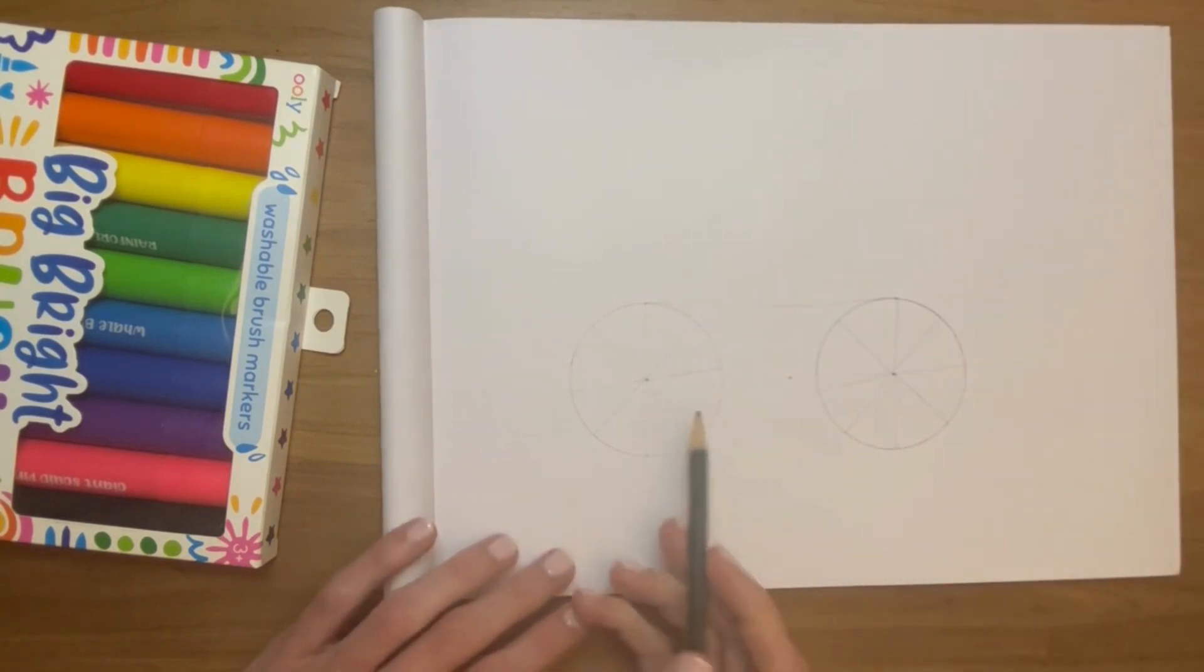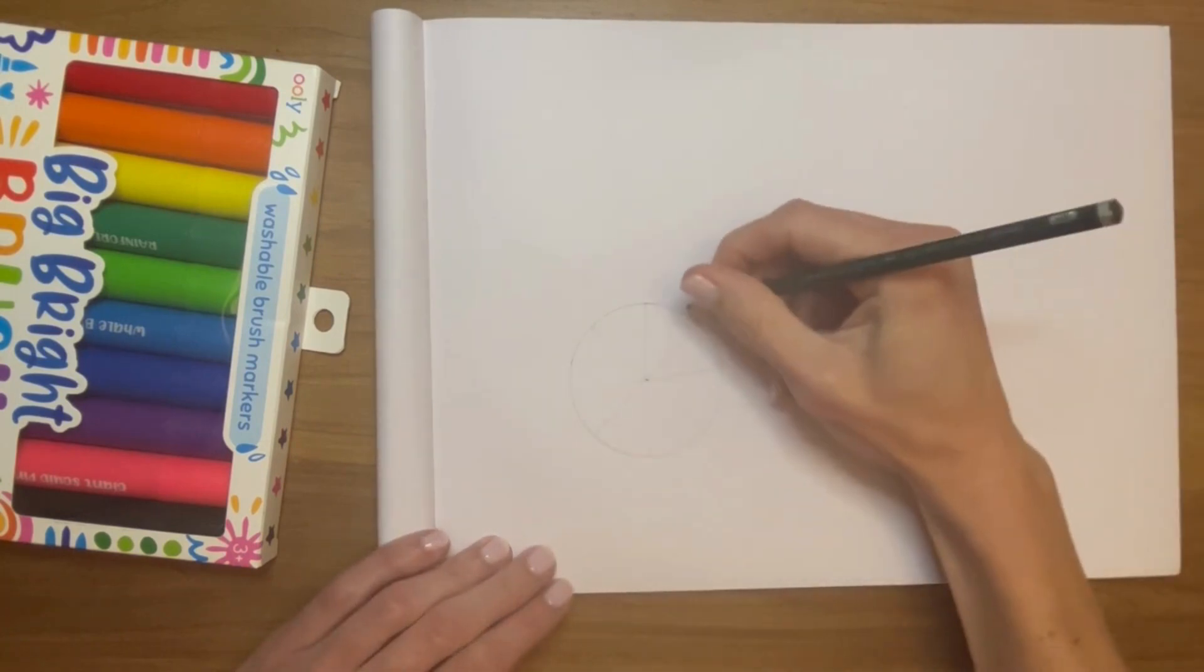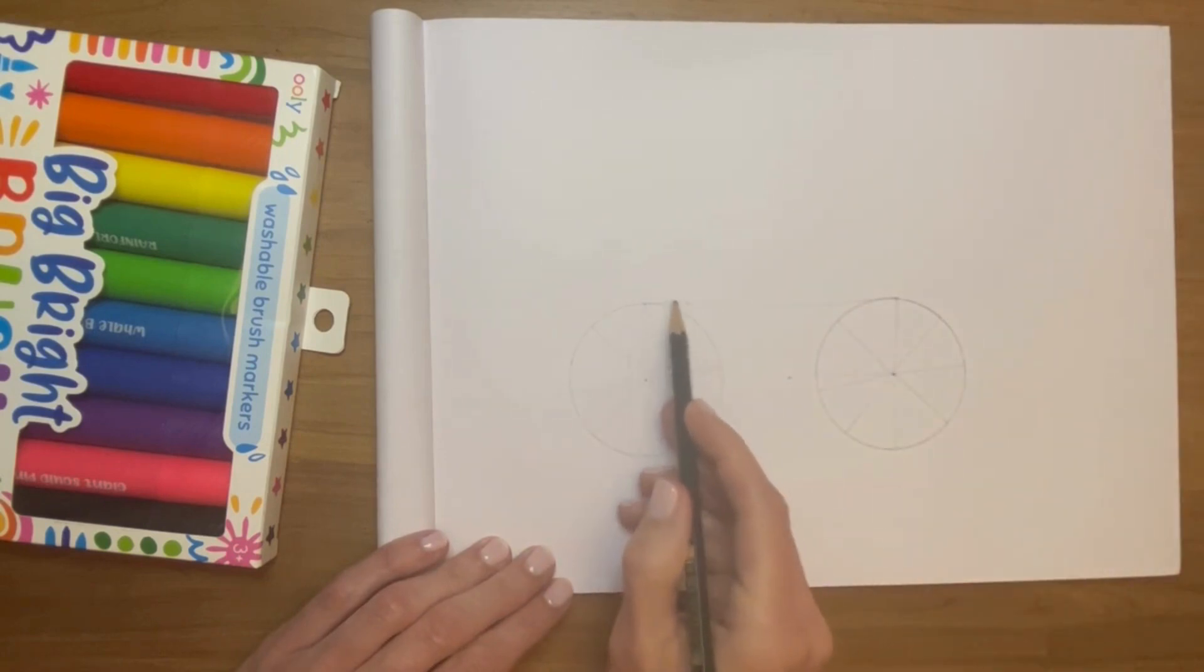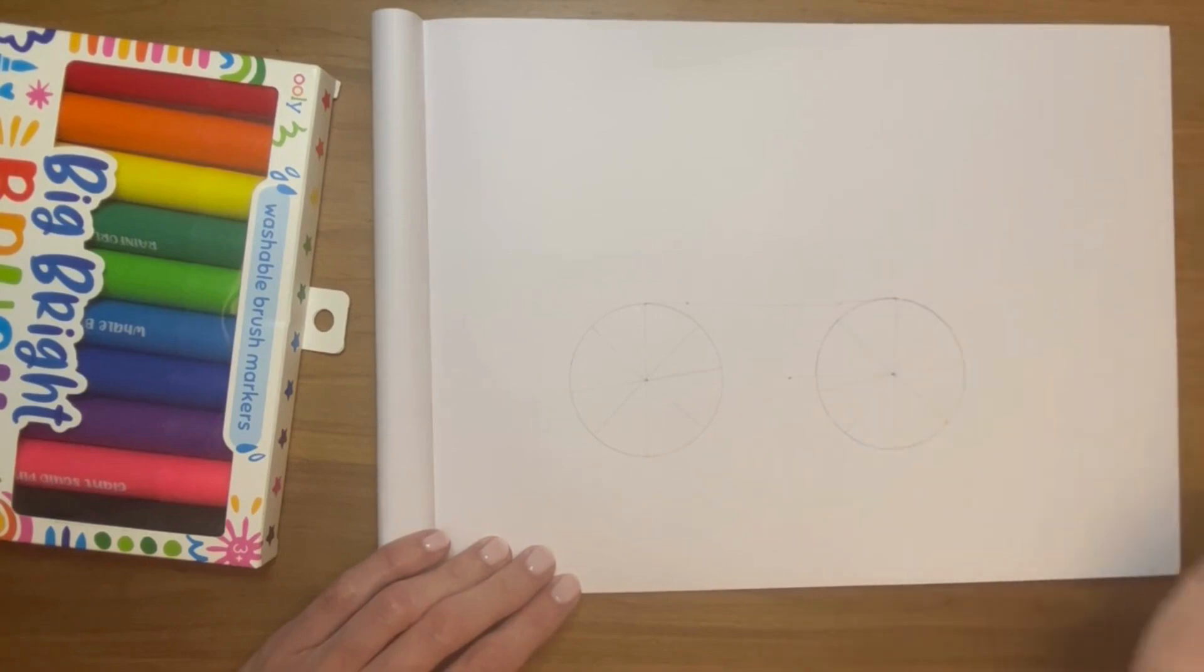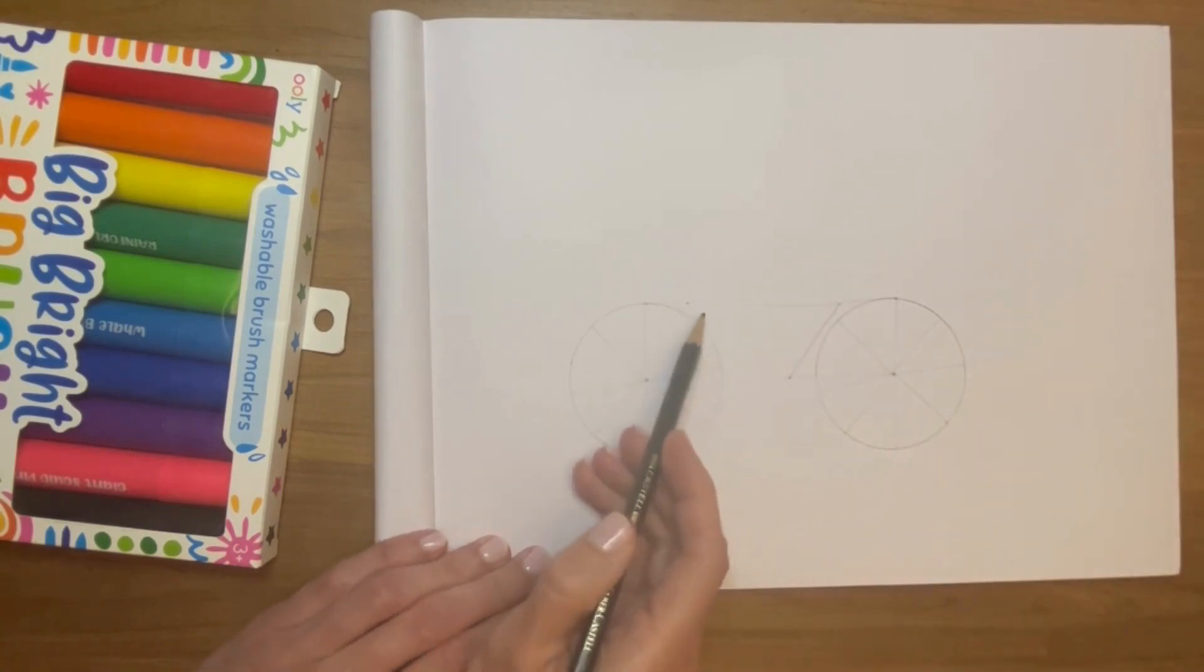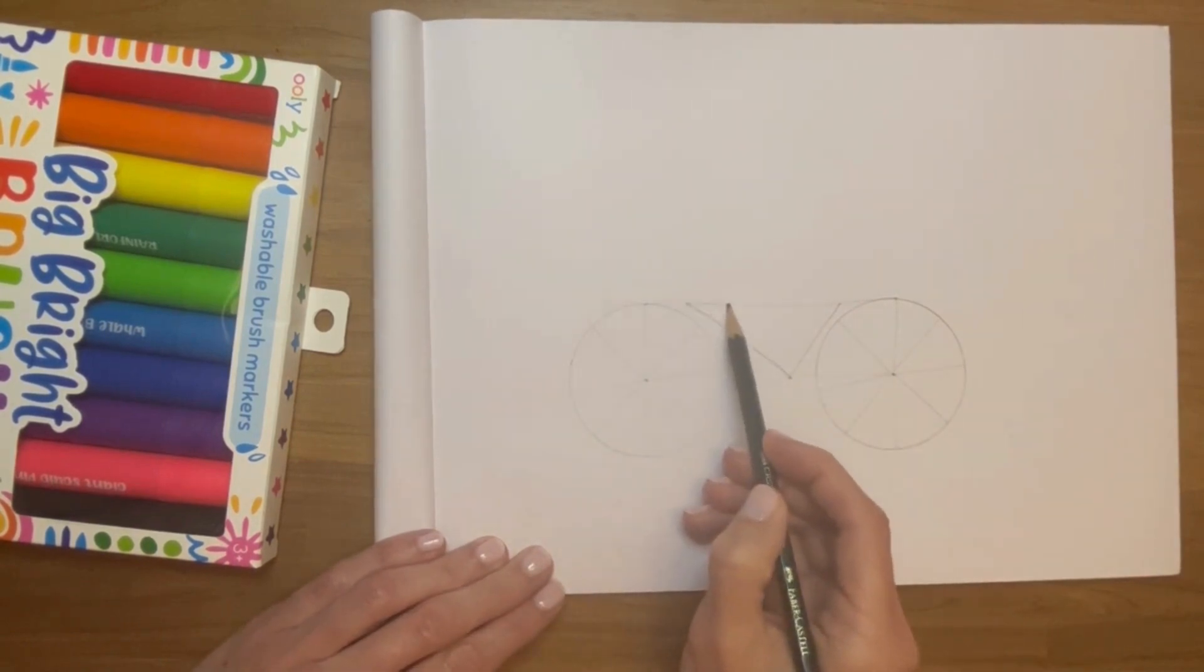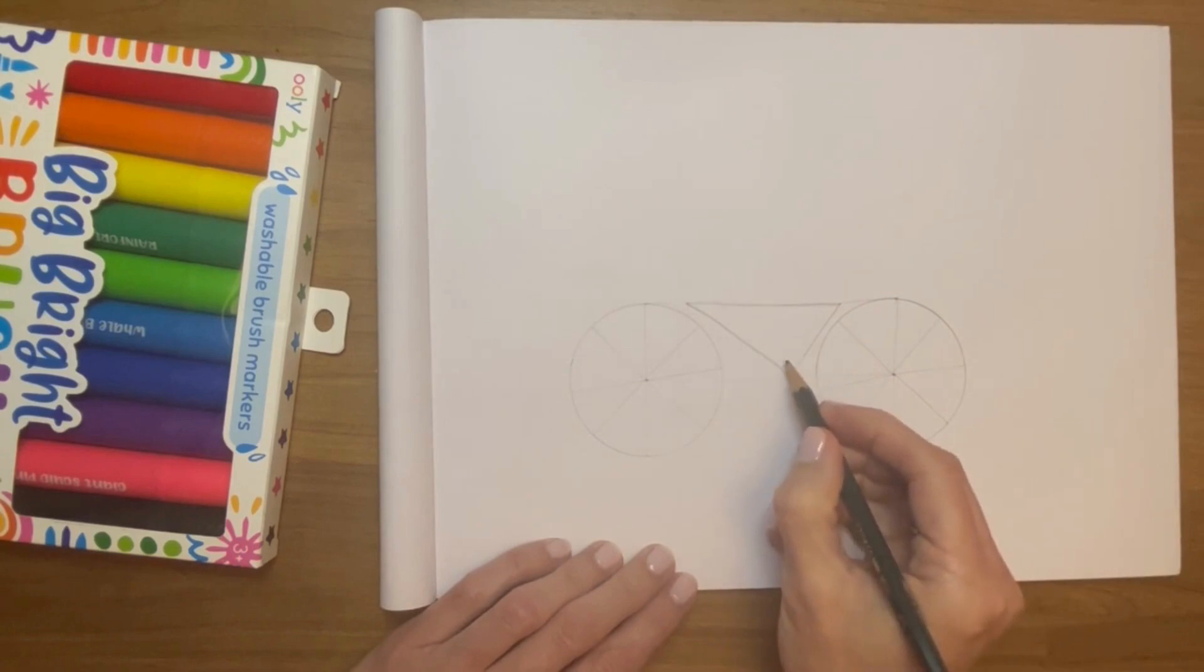All right, now I'm going to go from up here, leaving a little bit of space between the wheel and the line, and a little bit of space here as well. I'm going to draw a triangle—from here to here, from here down here, down here, and then from here to here.